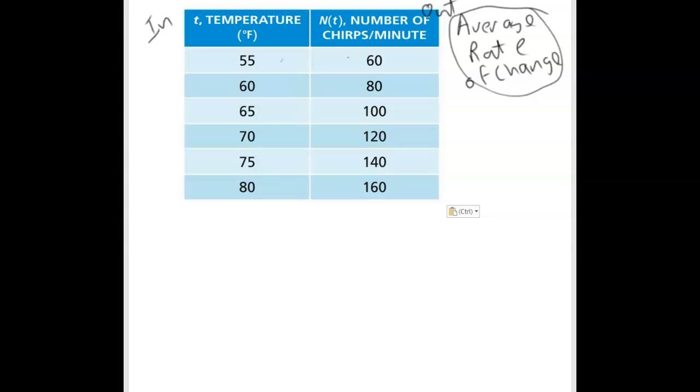Is it one chirp per degree? 10 chirps per degree? 20 chirps per degree? Is it the same rate of change between 55 and 60 degrees as between 75 and 80? That's what we're interested in, because if the average rate of change between any pair of points is the same, we have a line, a linear pattern.